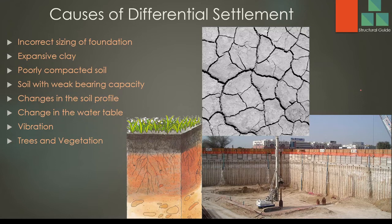Soil with weak bearing capacity is another cause — variations in bearing capacity from place to place lead to different settlements in the structure. Additionally, changes in the soil profile matter. Without proper soil investigation, the actual ground conditions and profile won't be known. Ground conditions may vary across a site, and since soil properties differ from location to location, there may be different settlements.